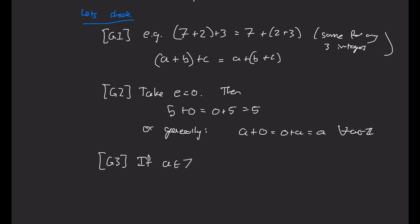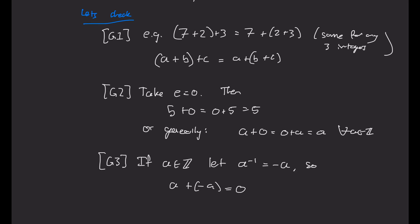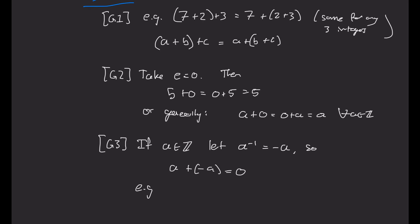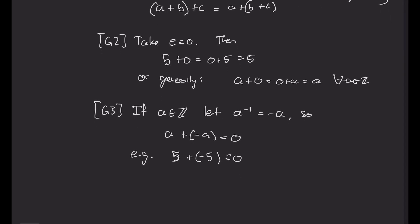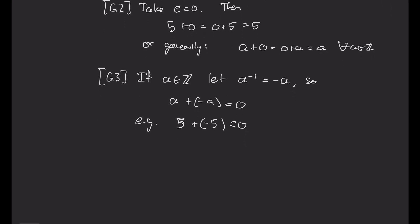It's associative, and we want inverses next. So if a is any integer, let's define this a inverse to be negative version of a, or negative a. Then a plus negative a is 0. Or just as an example, 5 plus negative 5 is 0.